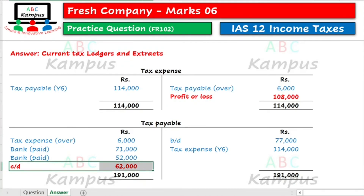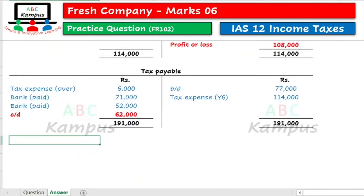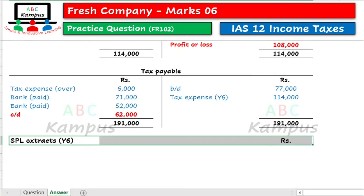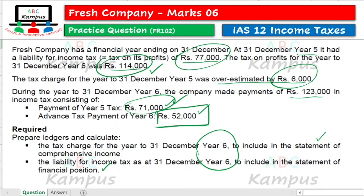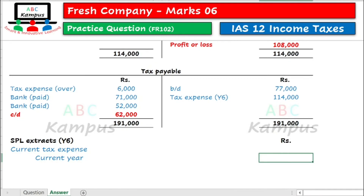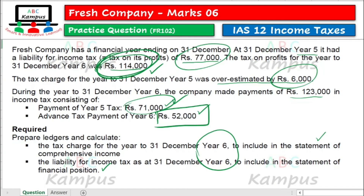Ledger se to hummne calculate kar liye hai, lekin sath hi extracts ke andar bhi kaise present karenge, aur ek alternative discussion bhi karenge — kiya isse aagar ledger ke bagair calculate karna ho, toh aap kaise kar sakte hai. To profit or loss ke agar hum extracts banaate hai, toh sabse pahle current tax expense, aur usmein hummne current year ka tax lena hai — current year ka tax question me 114,000 given hai.